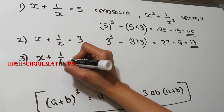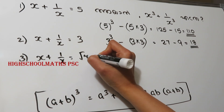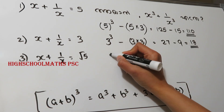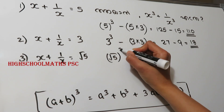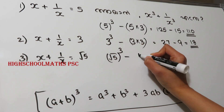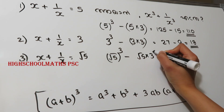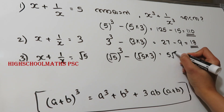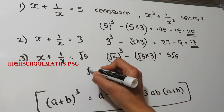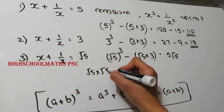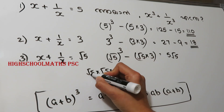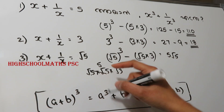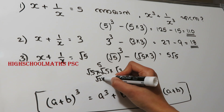x plus 1 by x is equal to root 5. x-cubed plus 1 by x-cubed — what do I have to find? If you have root 5, it is the cube minus. How do we multiply root 5 without 3? I will multiply root 5 without 4 — that is 5 root 5. Root 5 into root 5 into root 5 is root 5 cubed. If you have root 5 into root 5, we will have root 5.